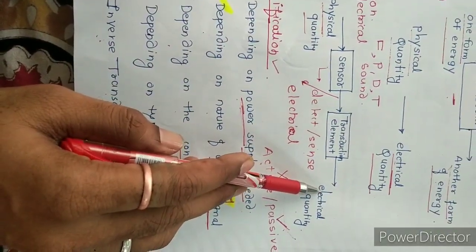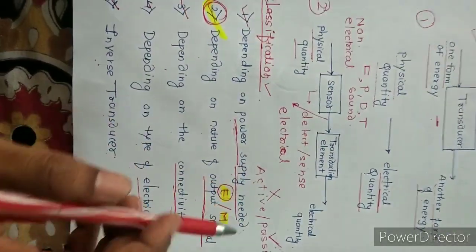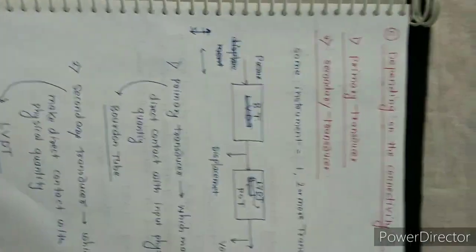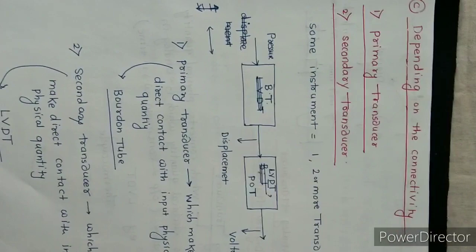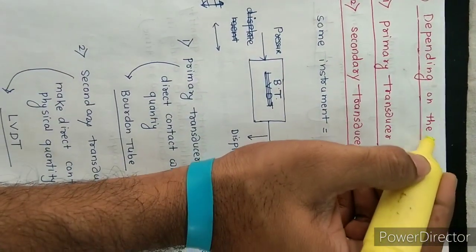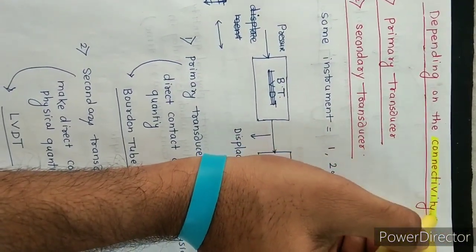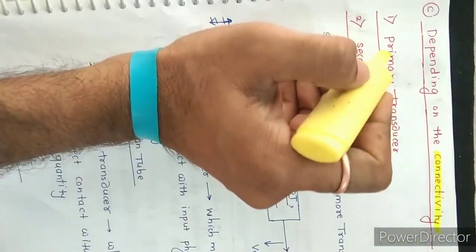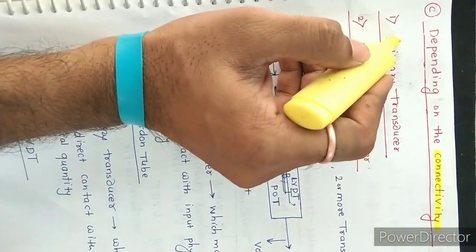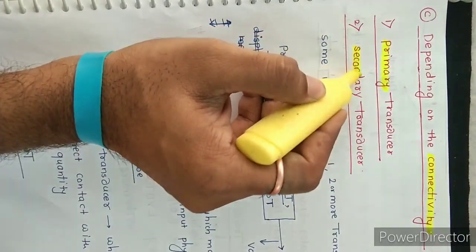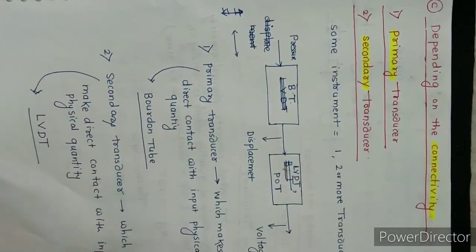The next classification is depending on the connectivity. There are two types of transducer: the first is the primary transducer and the second is the secondary transducer.